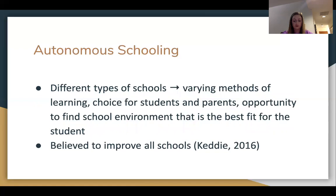Different types of schools may choose different methods of working toward the same goal of preparing students to contribute to society. These varying methods have, over time, contributed to autonomous schooling — the idea that students and parents have a choice of which school they attend. Students may attend the traditional public school to which they are districted, or choose to attend or apply to different schools such as private schools and charter schools. As more schools are developed, this choice becomes harder. School autonomy is believed to improve all schools since they have to compete for students.